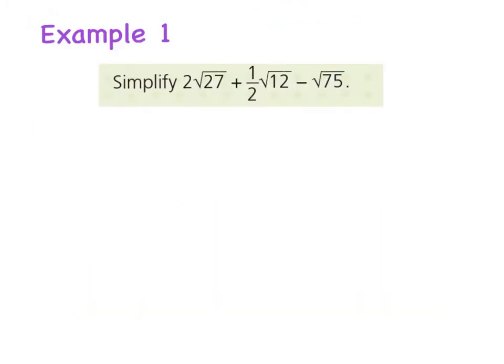Okay, so example one here asks us to simplify the following surd. Now we know ourselves, we can only add and subtract surds if they are the same. So if we had 3√4 plus 2√4 we can get 5√4. That's completely fine, but we can't add or subtract the surds if they're different.